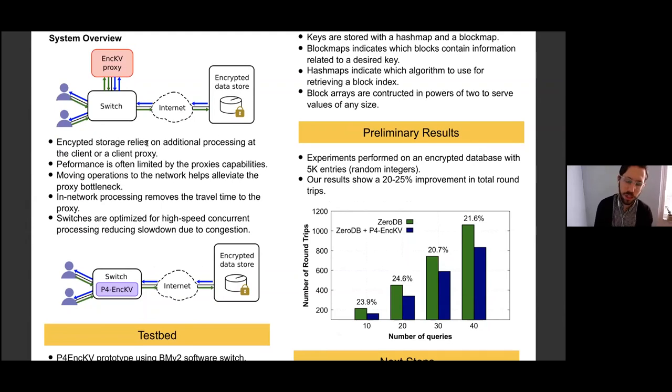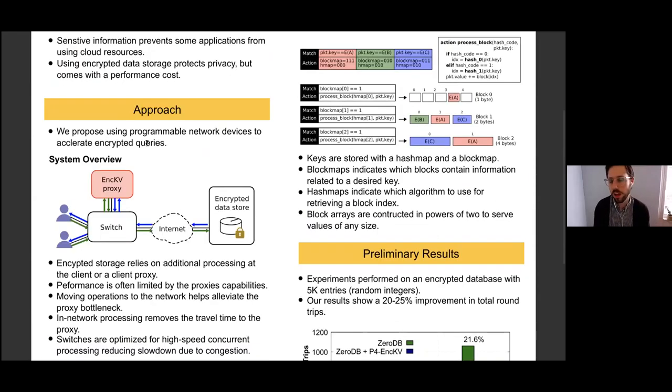The zero DB in particular doesn't actually have a proxy—the proxy and the client are essentially the same system. In terms of reduction in round trips, it's promising. And in terms of memory reduction, if we were to use traditional net cache techniques, I think we'd use 10 to 20% more memory than we have here.